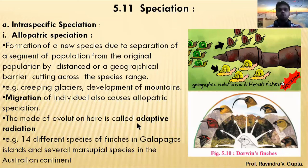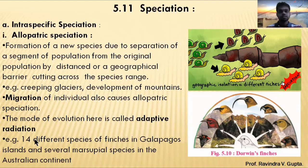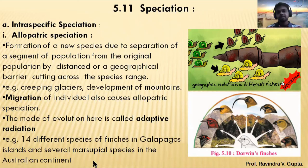The mode of evolution in allopatric speciation is called adaptive radiation. When one population is diverted and isolated into a different type of habitat, this type of evolution is called adaptive radiation. A well-known example is the 14 different species of finches in the Galapagos Islands, and several marsupial species on the Australian continent.